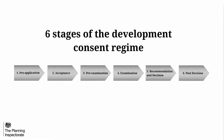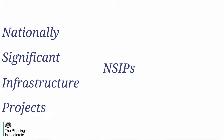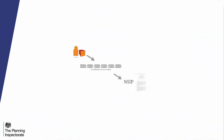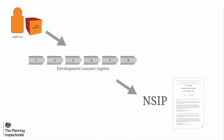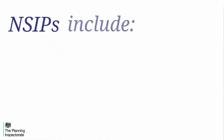There are six stages of the Development Consent Regime for Nationally Significant Infrastructure Projects, otherwise known as NSIPs. The Development Consent Regime is the process applicants must go through when seeking permission to construct an NSIP. NSIPs include the following categories of infrastructure.